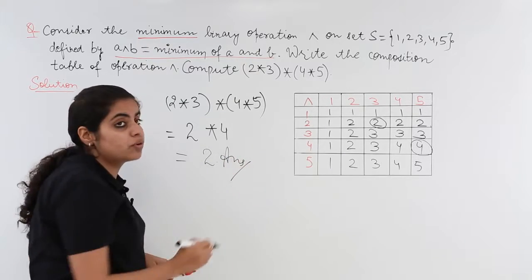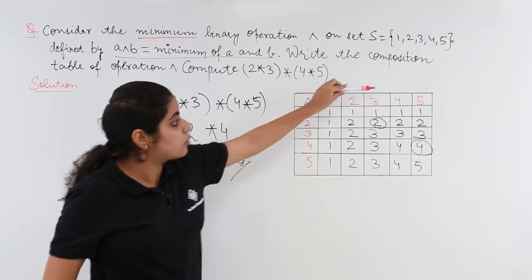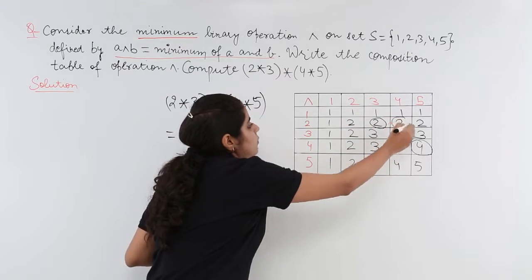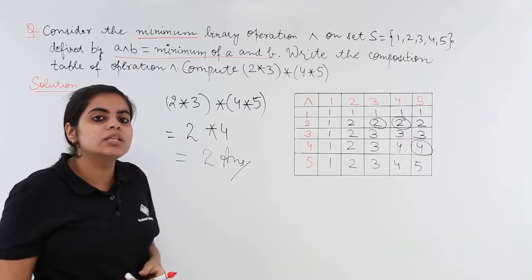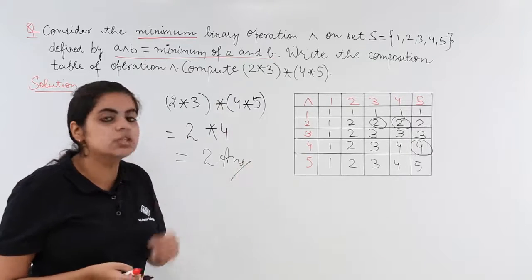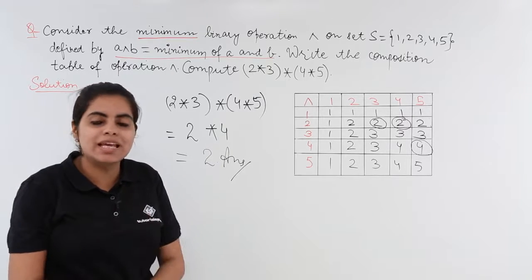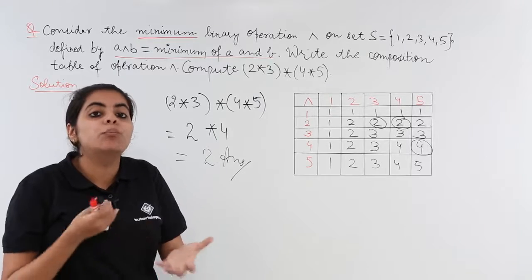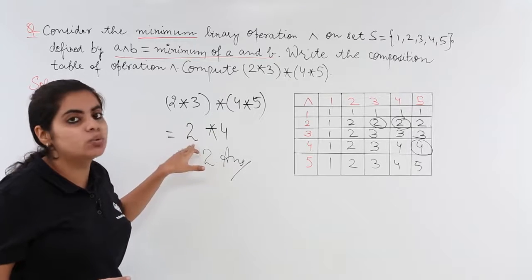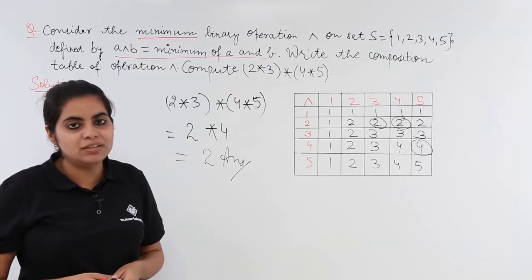If you want to do the answer from the table, 2 star 4: where is 2? 2 is here. Where is 4? 4 is there. You need to move forward from 2 to 4, and we have 2. In this question, we saw how to solve minimum value operation. In some other books, you may find maximum operation. The same technique happens. Maximum means greater of the two, so if you have 2 star 3, the answer would be 3 for maximum. This is the only difference. This completes the topic of binary operations.